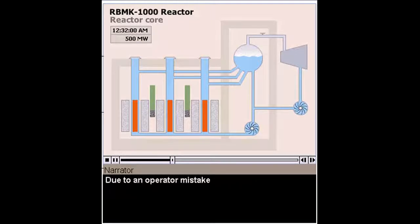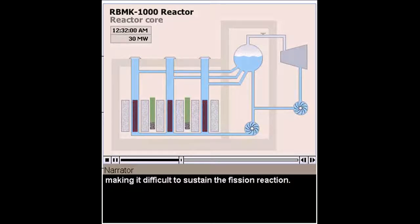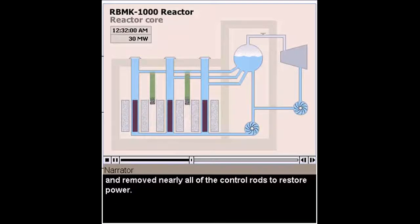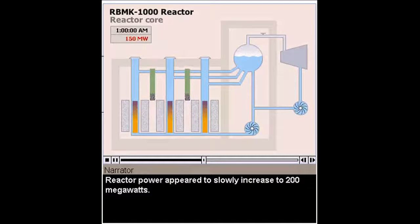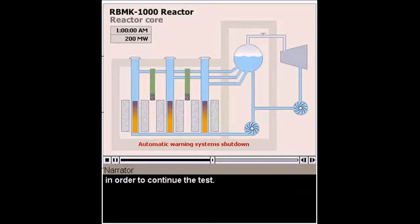Due to an operator mistake or a failure of the automatic system, the power level suddenly dropped to around 30 megawatts, making it difficult to sustain the fission reaction. Startled by the loss in power, the operators violated safety procedures and removed nearly all of the control rods to restore power. Reactor power appeared to slowly increase to 200 megawatts. At the same time, the instability of the reactor forced the operators to take manual control of the cooling system and to shut down a number of automatic warning systems in order to continue the test.